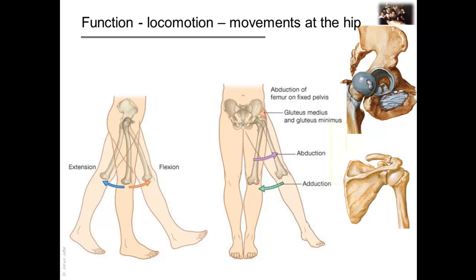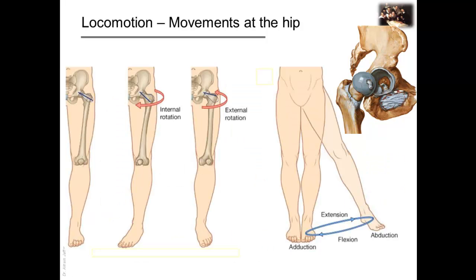Movements at the hip joint are flexion, extension, around a transverse axis; abduction, adduction, around an anteroposterior axis; medial and lateral rotation, around a vertical axis.